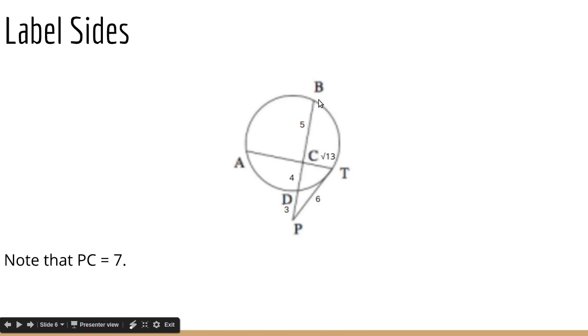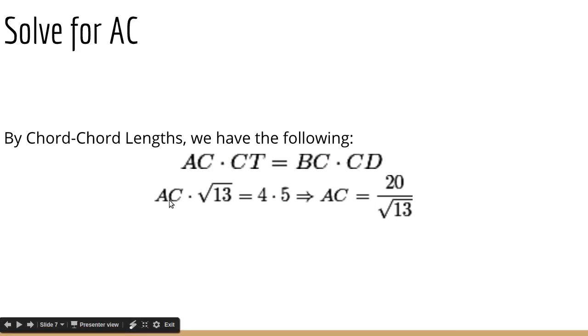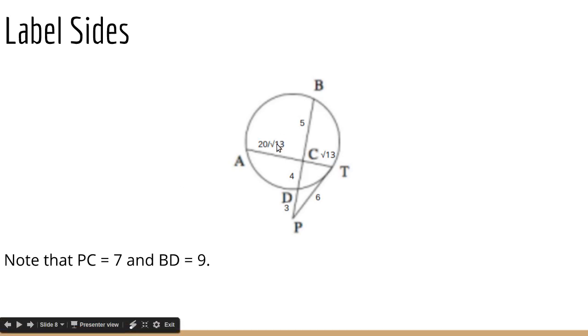The next thing we have to notice is that we have two intersecting chords, which means we can use our chord chord length theorem to find AC, which gives us another side to work with. So we have AC times CT equals BC times CD. And we substitute, AC times square root of 13 equals 4 times 5. 4 times 5 is 20. Divide both sides by square root of 13. You should get 20 over square root of 13. And then I've labeled that on the diagram.